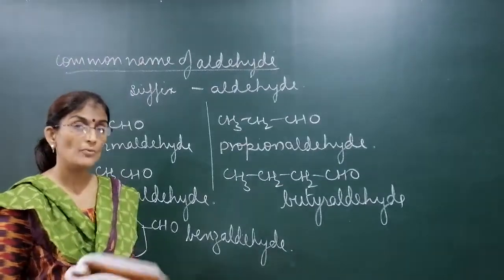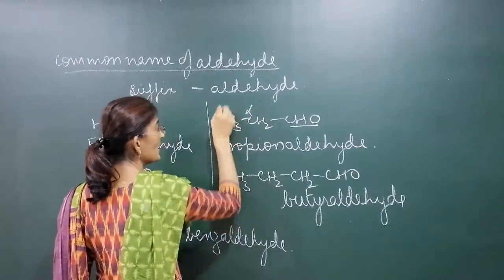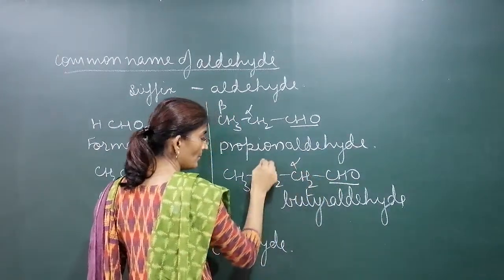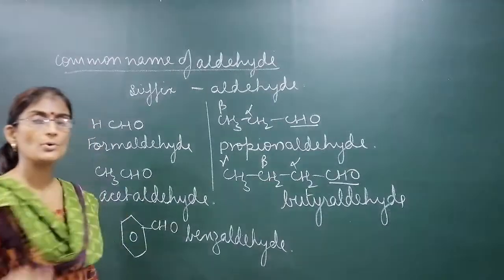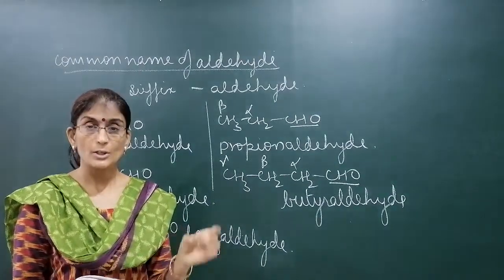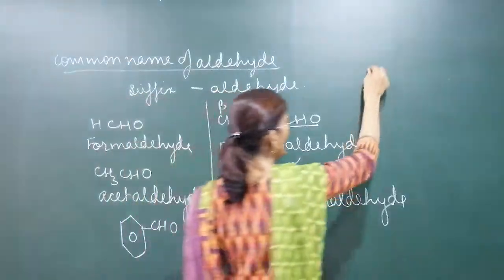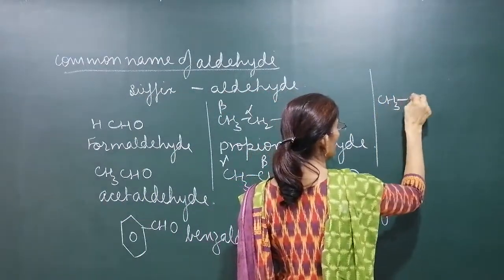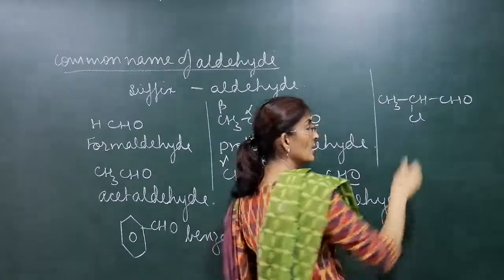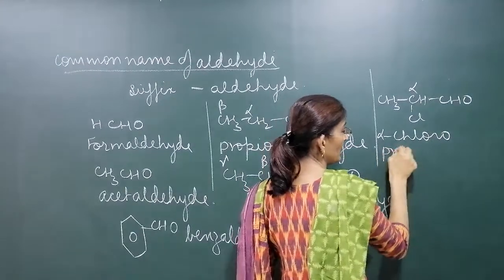While writing common names, we also use the positional terms alpha (α), beta (β), gamma (γ), and delta (δ). The carbon of the functional group (–CHO) is position alpha; its neighbouring carbon is beta; the next is gamma; then delta. For example, if we have CH₃–CHCl–CHO, the chloro group is at the alpha position, so its common name is alpha-chloropropionaldehyde.